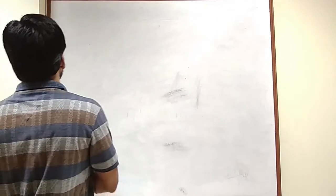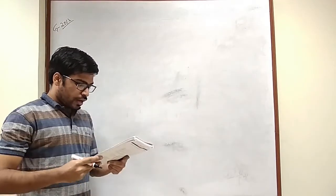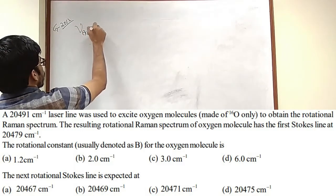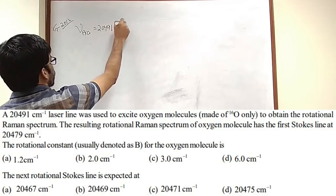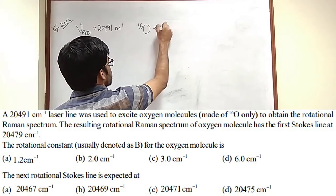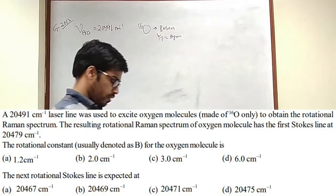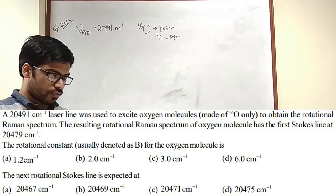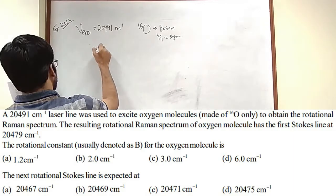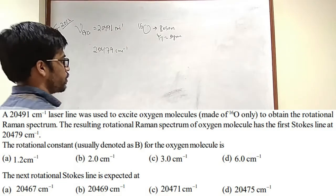The question we have is from Gate 2012. The question says a 20491 cm inverse laser line was used to excite oxygen molecules, made of oxygen-16 only. That means it is a boson. Psi total has to be symmetric. To obtain the rotational Raman spectrum. The resulting rotational Raman spectrum of oxygen has the first Stokes line at 20479 cm inverse.